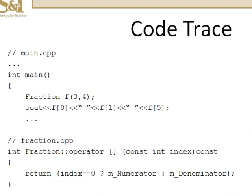We're going to do a code trace. Here in main we're going to declare a fraction with numerator 3 and denominator 4. And then I'm going to output f of 0, f of 1 and f of 5.